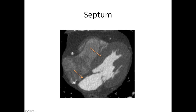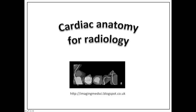You can also get a little gap in the interatrial septum called a patent foramen ovale, and this is incredibly common. If you've got your CT scan set up nicely, you can see it on CT scanning, and it's often seen on echo as well. So that's all for part one of Cardiac Anatomy for Radiology. I hope to see you again for part two.